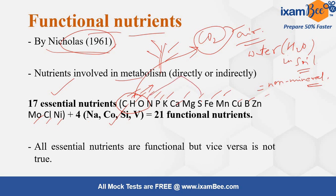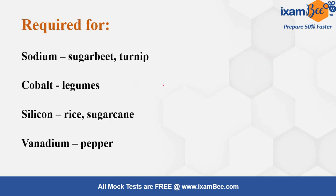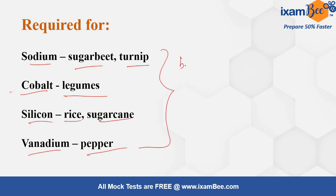Among the mineral elements, six come under primary nutrients, and NPK are required in the largest amounts. Certain elements are important for specific crops: Sodium is important for sugar beet and turnip, Cobalt for legumes, Silicon for rice and sugarcane, and Vanadium is important for pepper. These are the beneficial elements — they provide certain benefits but do not fit the criteria of essentiality.